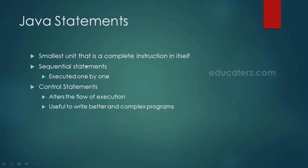Sequential statements are executed one by one, whereas control statements are executed randomly and repeatedly. For example, if I write something like system.out.println(hello), x = y + z, and system.out.println(x), these statements are executed by the JVM one by one in a sequential manner. This type of sequential execution is useful only for simple programs. If we want to write better and complex programs, we need better control on the flow of execution, and this is possible using control statements.